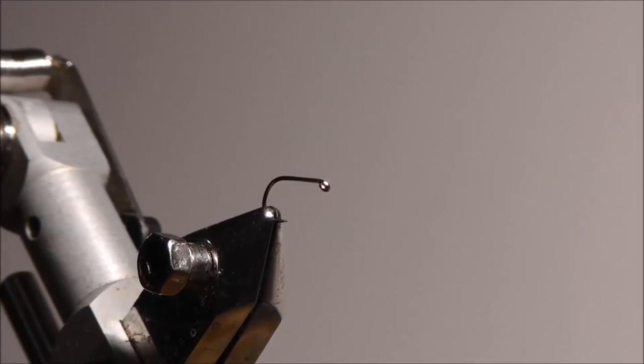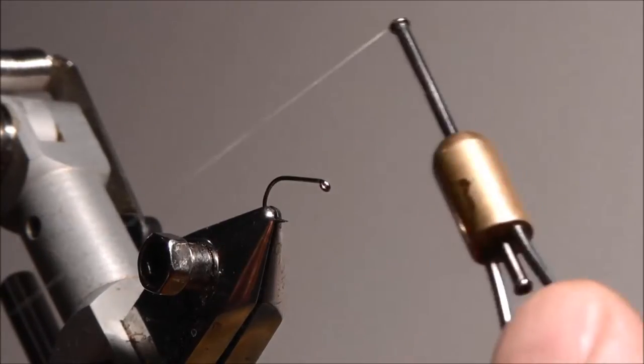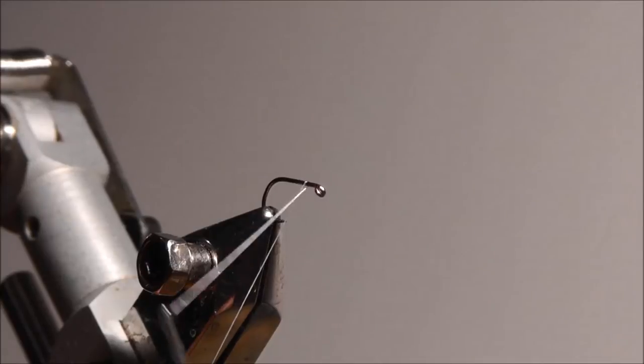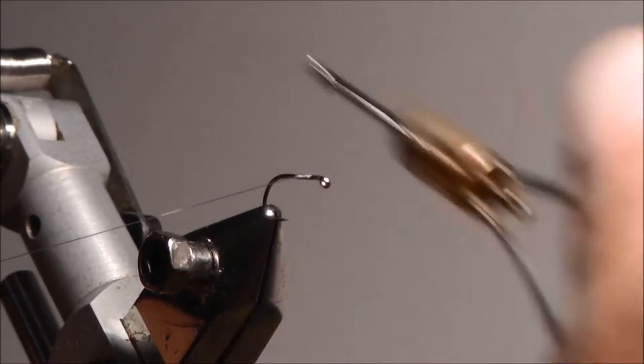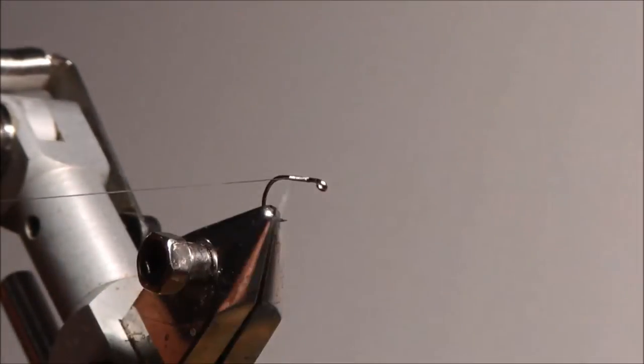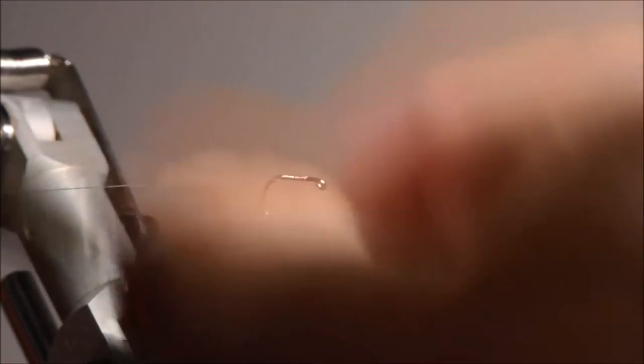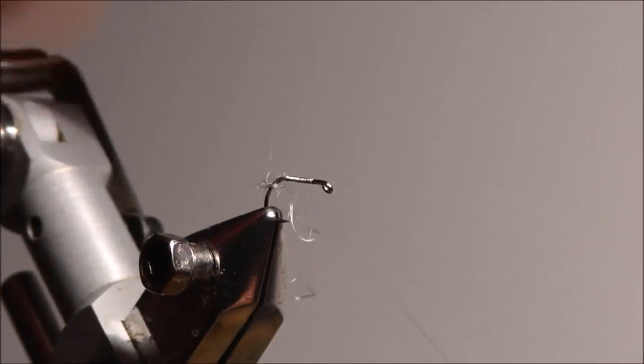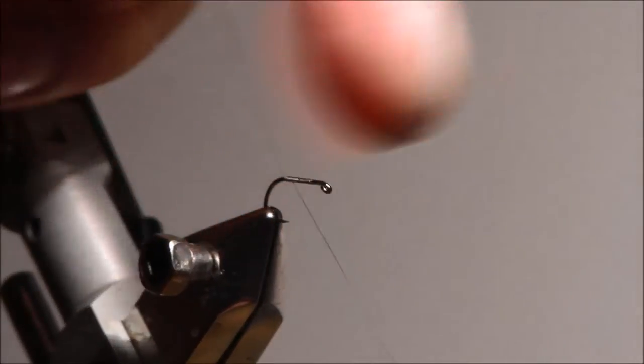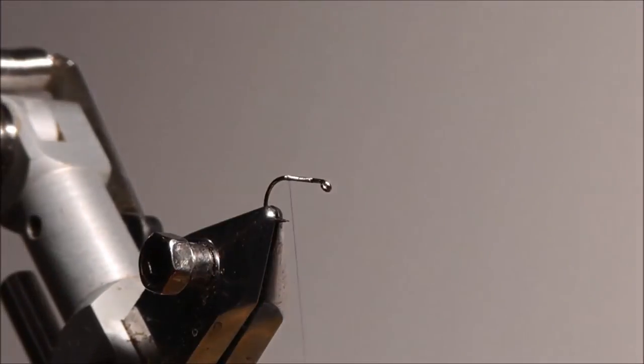Okay, I'm going to make a CDC F-fly. So what I'll do is put a line of thread on the hook, touch and turns like that. For the tail I use partridge, a few barbs of partridge.